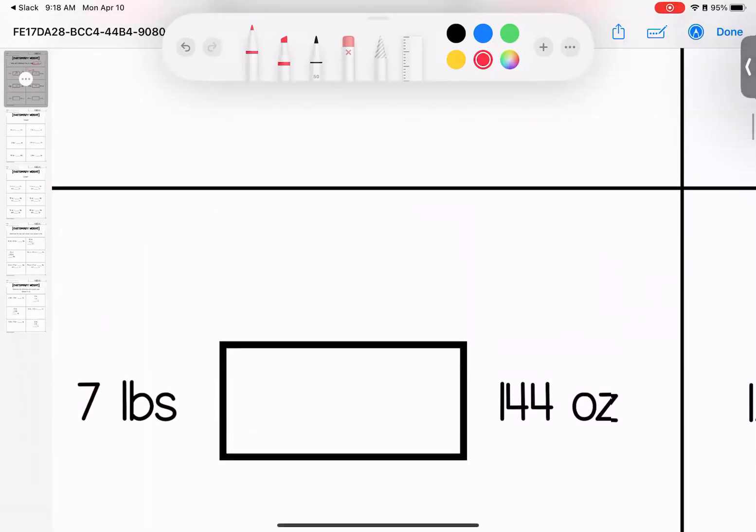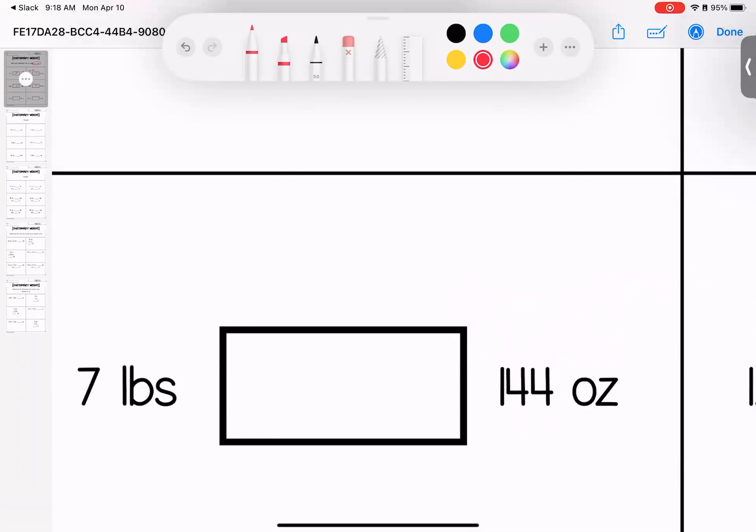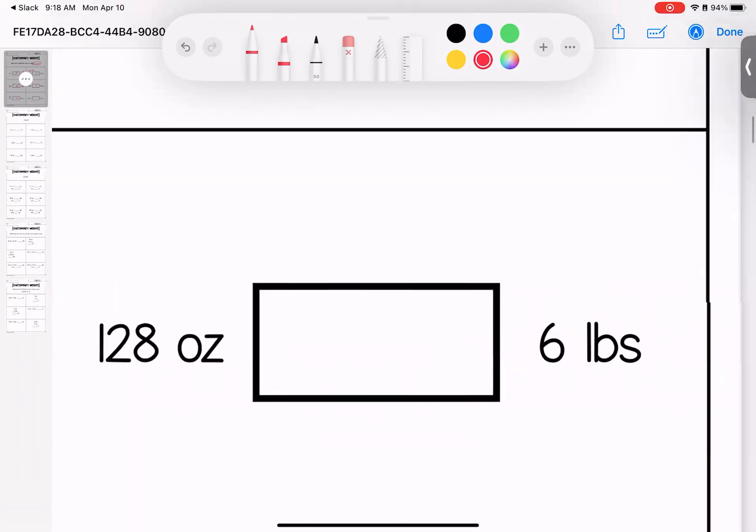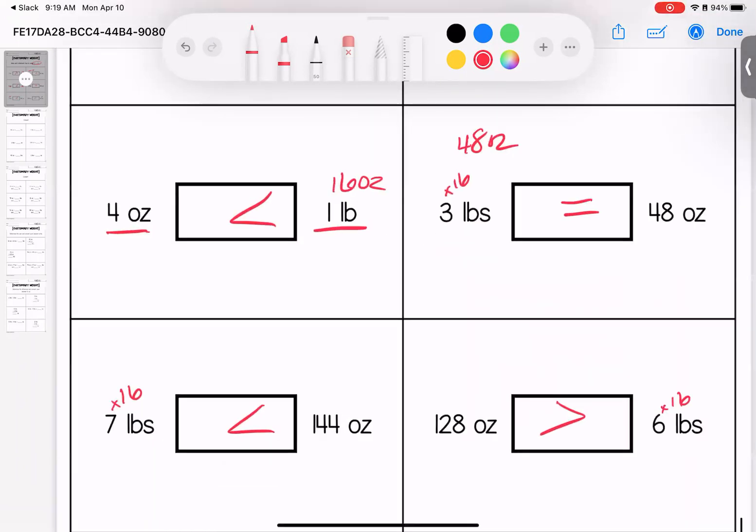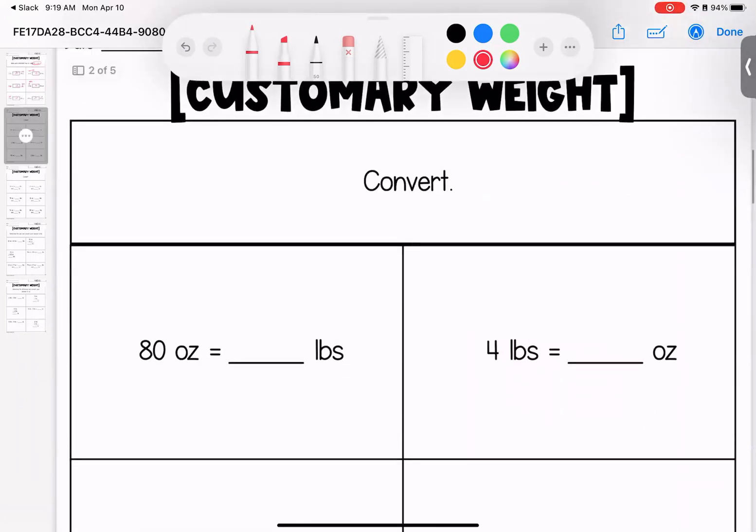And down here, seven pounds or 144 ounces. If I multiply these pounds by 16 ounces, I will see that 144 is the greater amount. Last one, six pounds or 128 ounces. Again, multiply by 16, we would see that 128 ounces is the greater value. Any questions on these kiddos? Bring them with you to class.